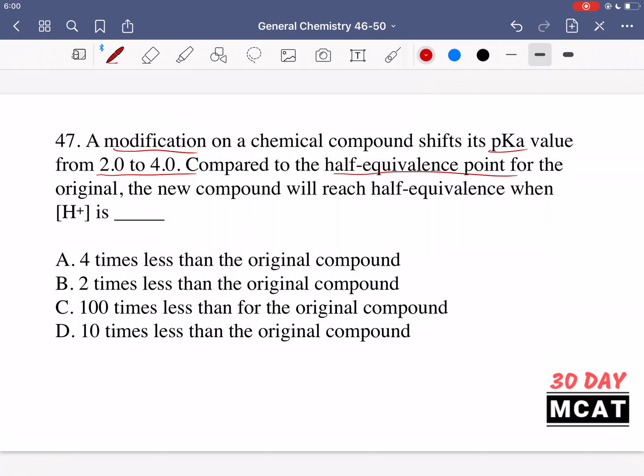For the half equivalence point, you need to understand what pKa is telling you, and this is the pH at which we have half of the compound fully protonated and half deprotonated. So this half equivalence point is the pH at which we have reached the pKa of the compound.